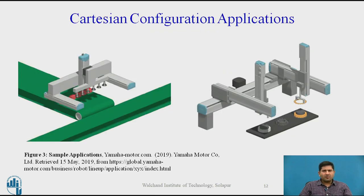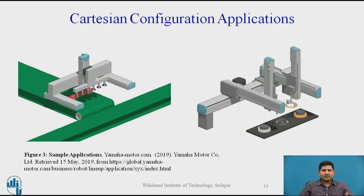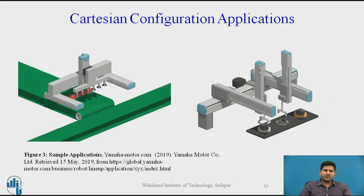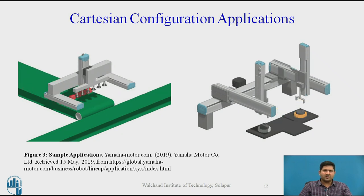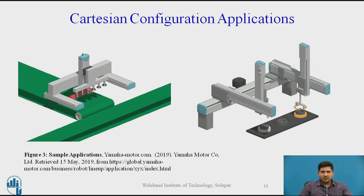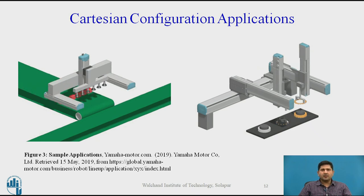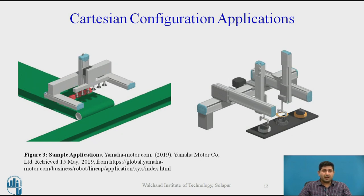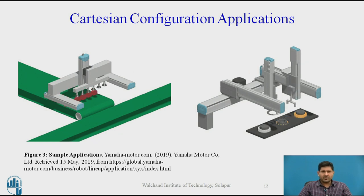A variety of applications are possible for Cartesian robots. Remember, there is no reason why these configurations cannot be used where other configurations are used, but there is a certain domain of applications where Cartesian robots find preference. One is if you have to pick up an object from the top, especially where you want to avoid any obstacles — this is where it comes very handy, like gantry applications. There are two animations showing how a typical Cartesian configuration is applicable in an industrial scenario for a pick-and-place task. The one on the right also demonstrates an insertion and assembly task, which is also very common for this configuration.